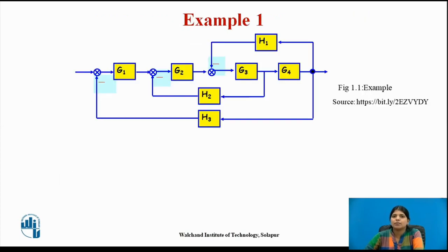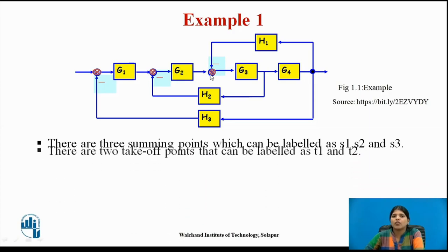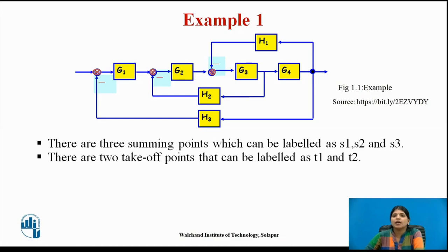Let us see an example. We identify the summing points and takeoff points, represented by S1, S2 and T1, T2 respectively. There are three summing points labeled as S1, S2, and S3, and there are two takeoff points labeled as T1 and T2.